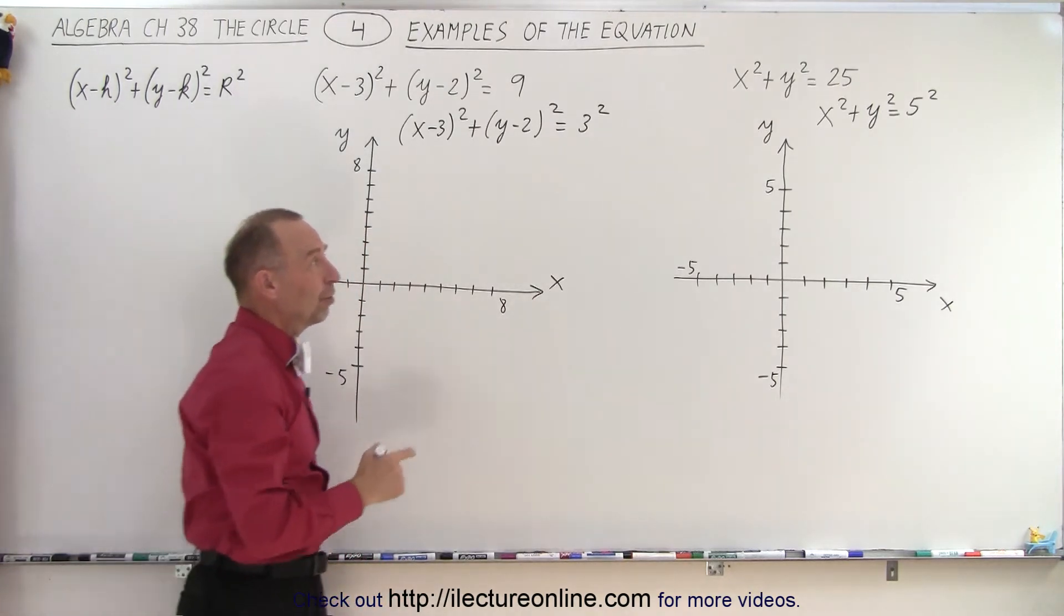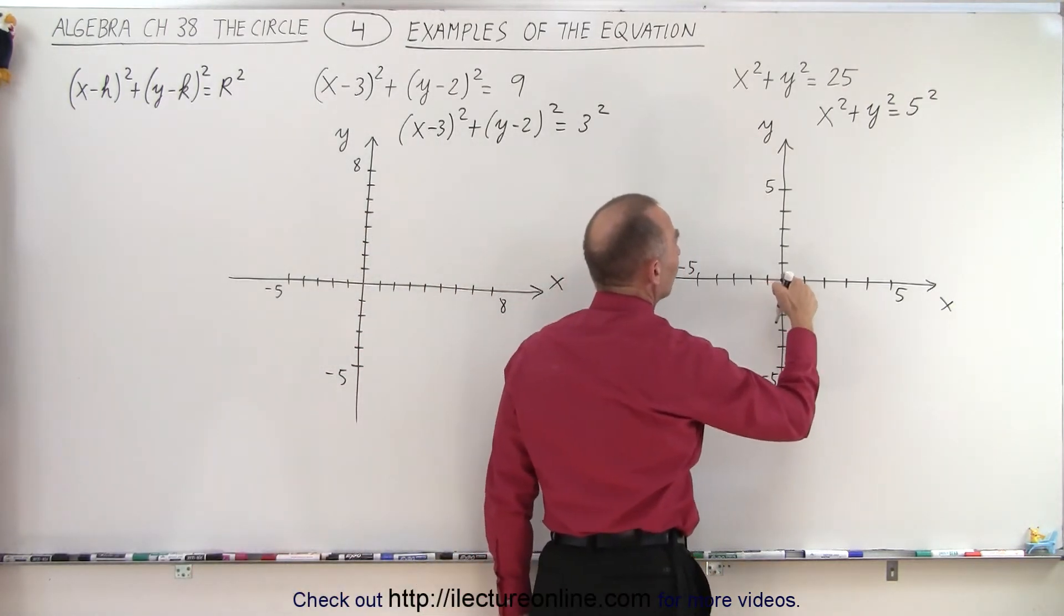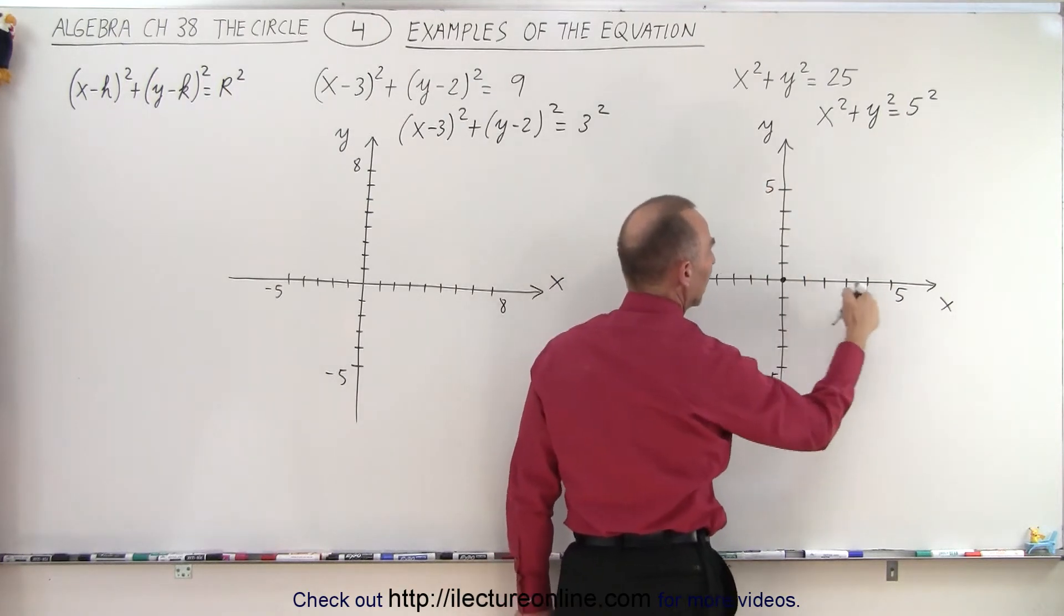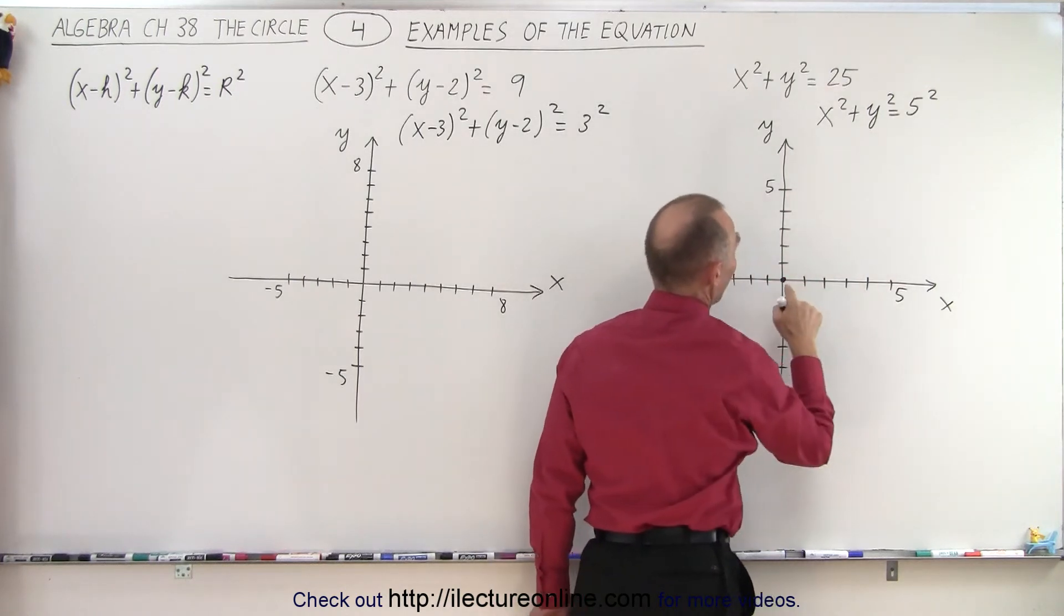So the way to do that is to first find the center. And in this case, the center is at the origin. And then you know that you can go in the direction of the y-axis or the negative y-axis, the x-axis and the negative x-axis, and find the point away from the origin that's equal to 5.